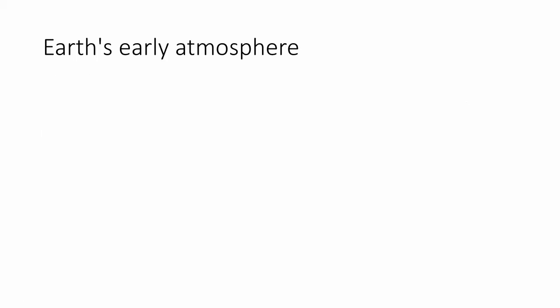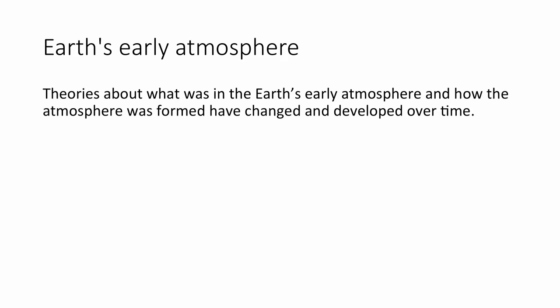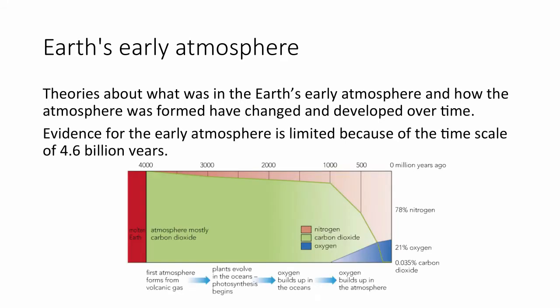The Earth's earliest atmosphere. Theories about what was in the Earth's early atmosphere and how the atmosphere was formed have changed and developed over time. Evidence for the early atmosphere is limited because of the time scale of 4.6 billion years. At this time, the Earth's surface was molten and there was very little fossil or geological record of this time, which was called the Hadean period — literally as hot as hell.